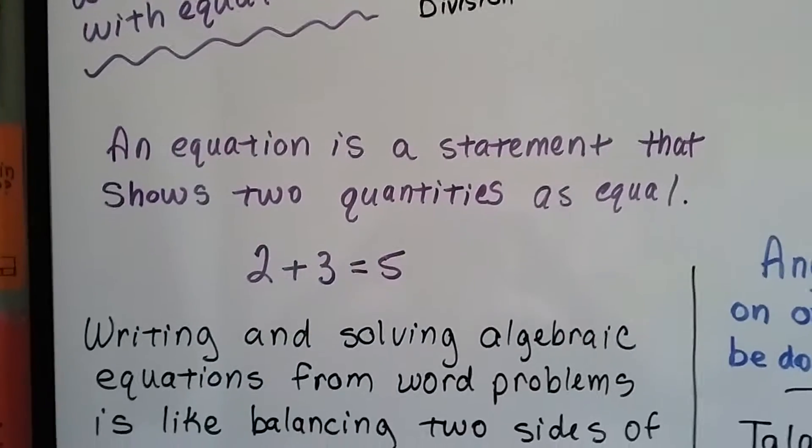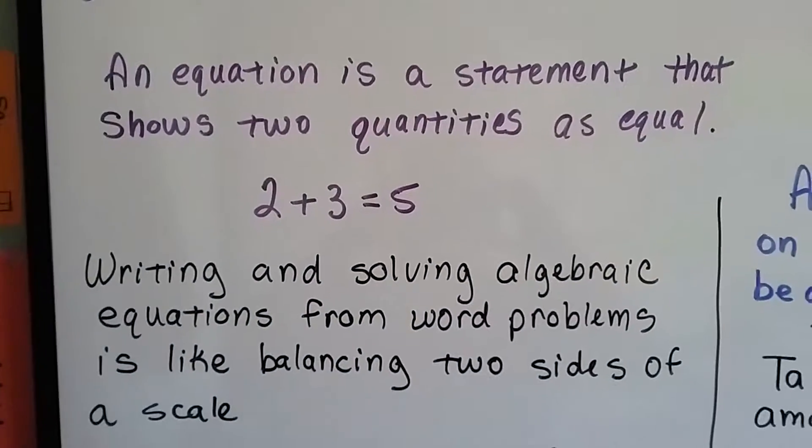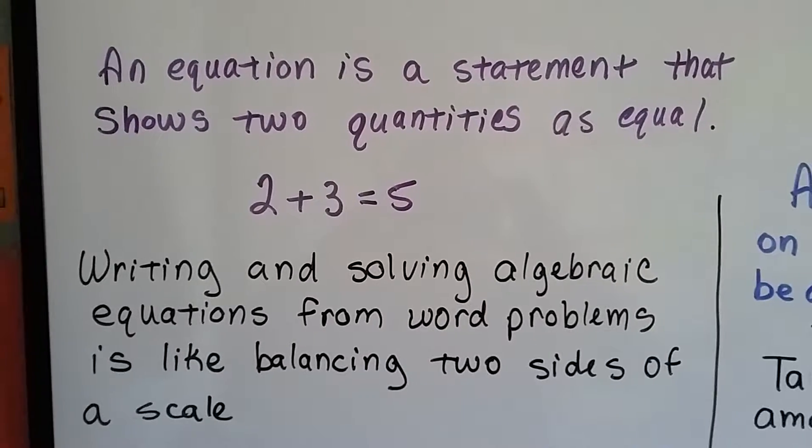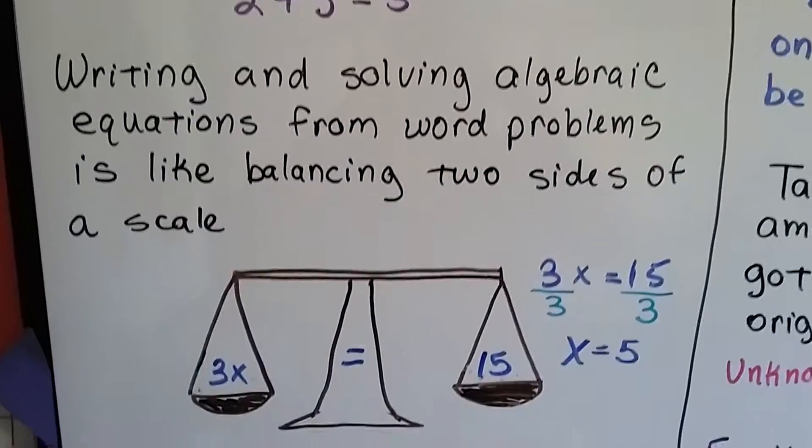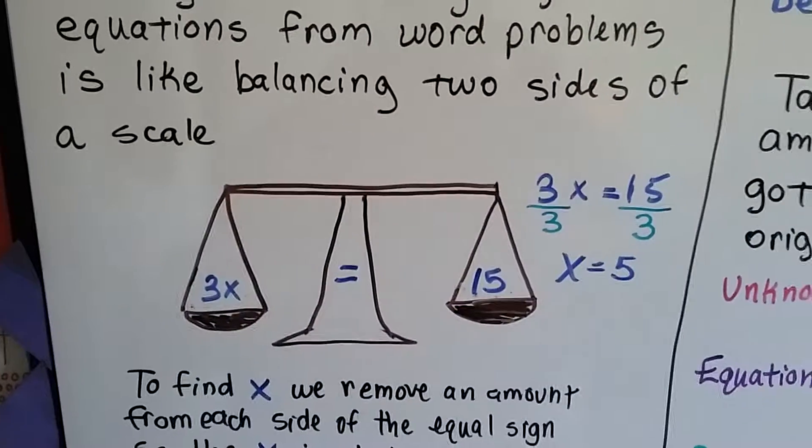An equation is a statement that shows two quantities as equal. So 2 plus 3 on one side of the equal sign is equal to the 5 on the other. They carry the same weight. Writing and solving algebraic equations from word problems is like balancing two sides of a scale.